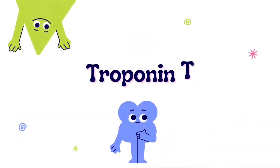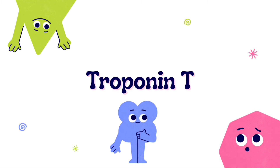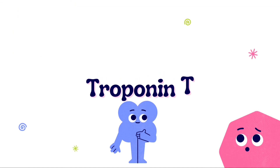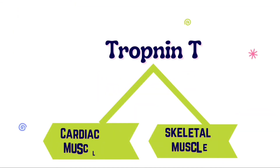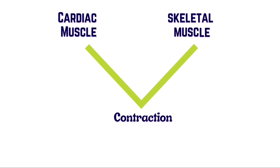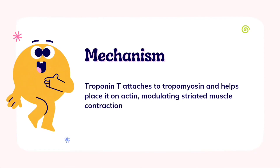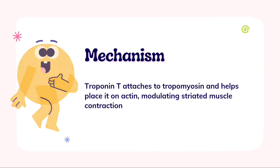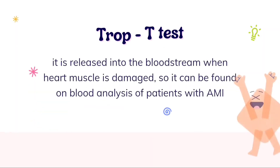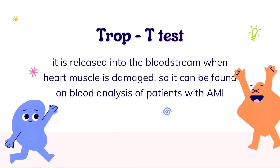We will now discuss troponin T — its clinical significance, laboratory investigation, interpretation, and the difference between troponin T and troponin I. Troponin T is a component of the troponin complex, made up of proteins that help skeletal and cardiac muscles contract. Both skeletal and cardiac myocytes express it. Troponin T attaches to tropomyosin and helps place it on actin, modulating striated muscle contraction. The troponin T test is often ordered by clinicians because troponin T is released into the bloodstream when heart muscle is damaged, and can be found in the blood of patients with acute myocardial infarction.